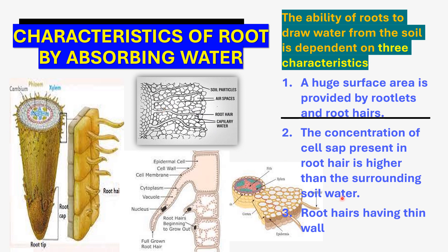Third characteristic: root hairs have thin walls. These are the three characteristic features of roots for absorbing water: first, a huge surface area; second, higher solute concentration of cell sap than surrounding water; and third, root hairs having thin walls.